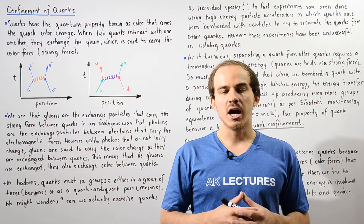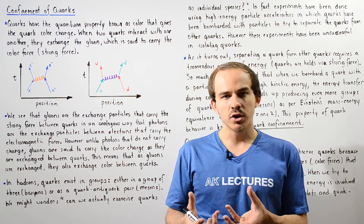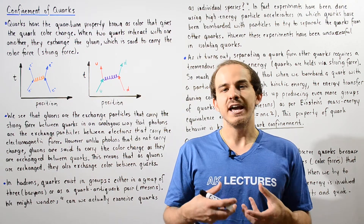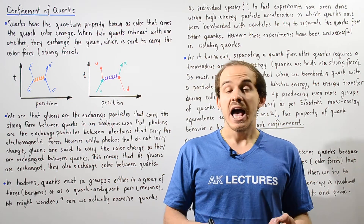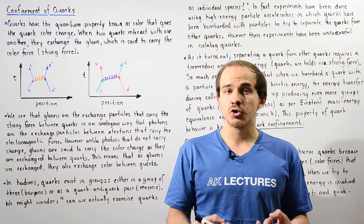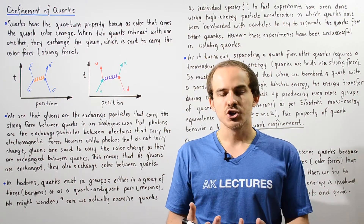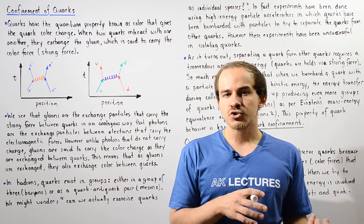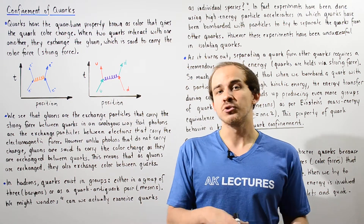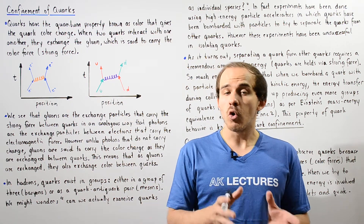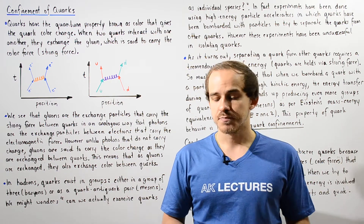In our previous discussion we said that quarks have a quantum property known as color, and the color of each quark creates or gives it the color charge. This is similar to electrons having electric charge, except quarks not only have electric charge, they also have color charge.